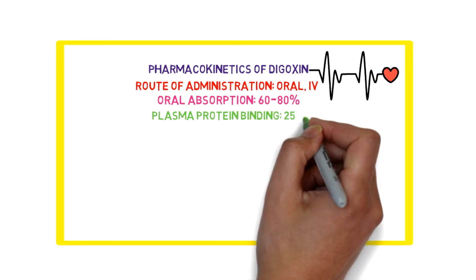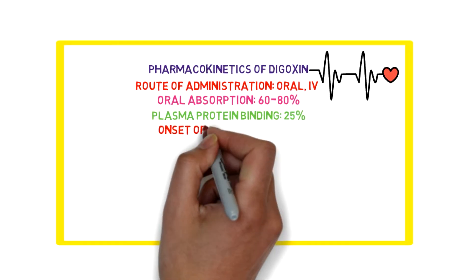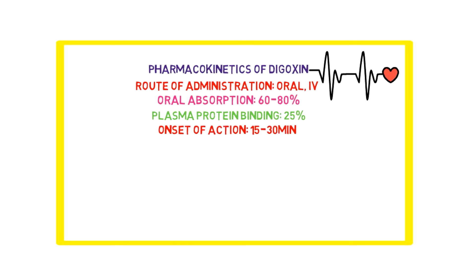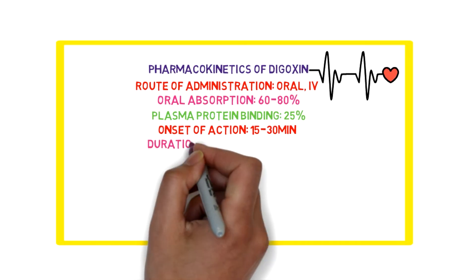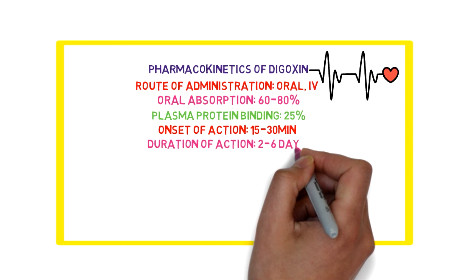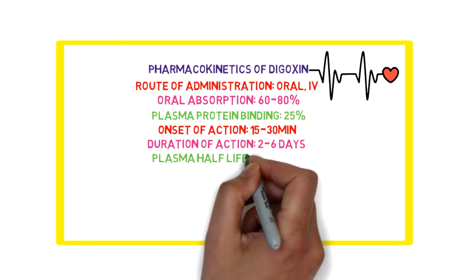If we see the time course of action of a full digitalizing dose of IV digoxin, the onset would be 15 to 30 minutes and the duration of action would be 2 to 6 days.